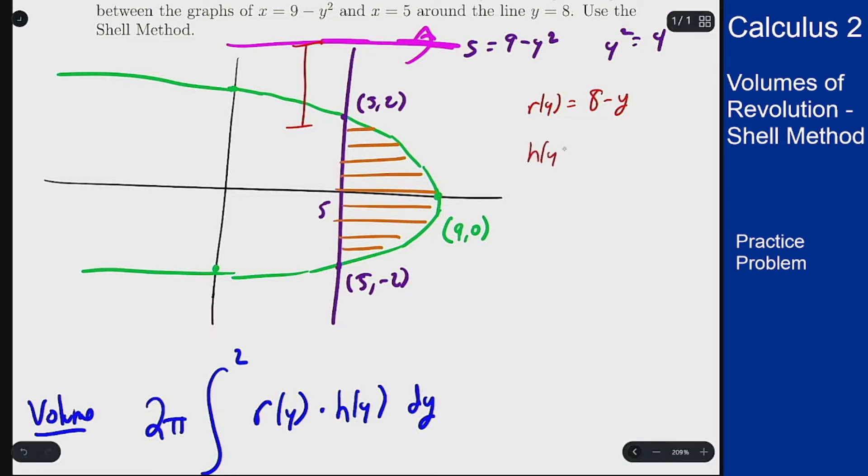Our height is going to be the length between these two curves. So it's going to be the right curve, which is 9 minus y squared, minus the left curve, which is 5.